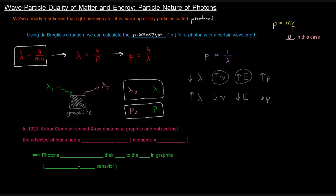In 1923, Arthur Compton shined X-ray photons at graphite and noticed something interesting. X-ray photons came in with a certain wavelength and reflected with a different — specifically larger — wavelength. He noticed that the reflected photons had a larger wavelength, which means they had a smaller, lower momentum than the incoming photons. So the momentum of the reflected photons was less than that of the incoming photons.